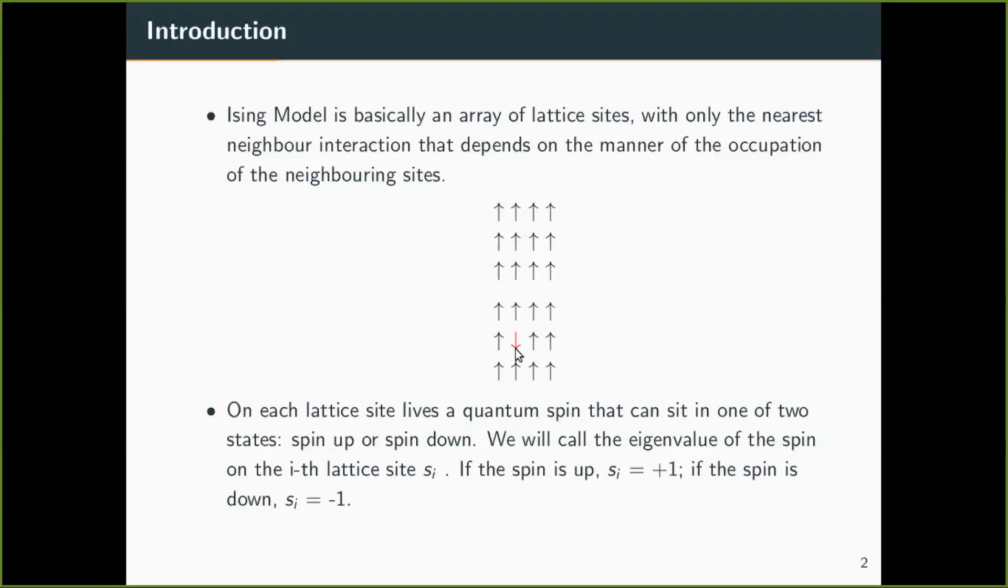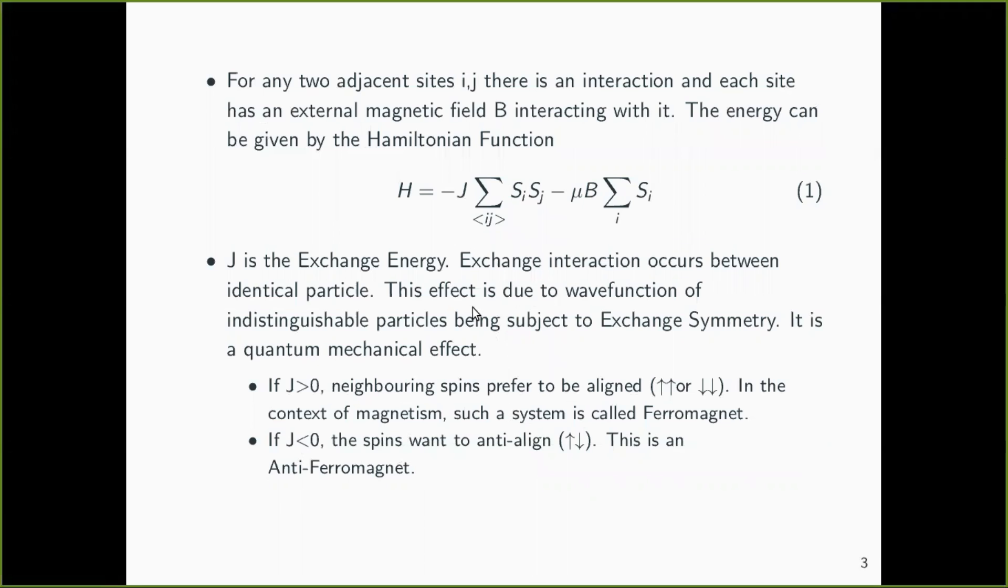Now we will apply magnetic field to the system. For any two adjacent sites ij, there is an interaction and each site has an external magnetic field. The Hamiltonian of the system can then be written as this,